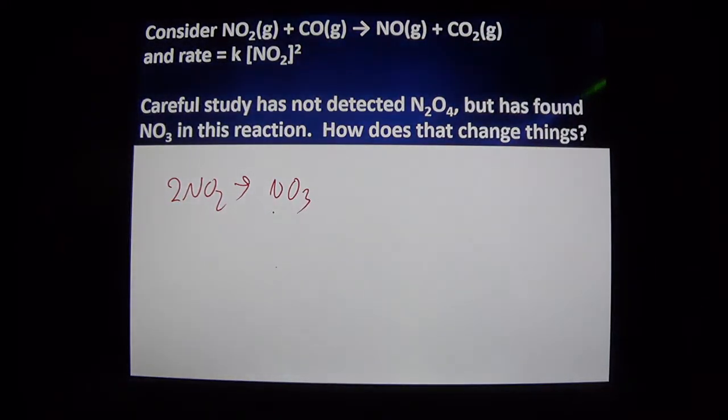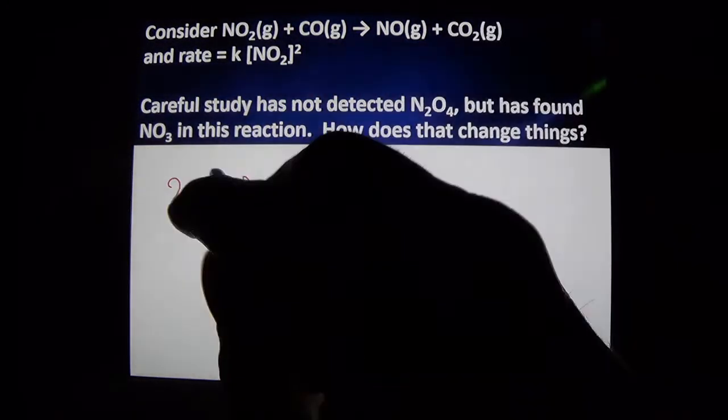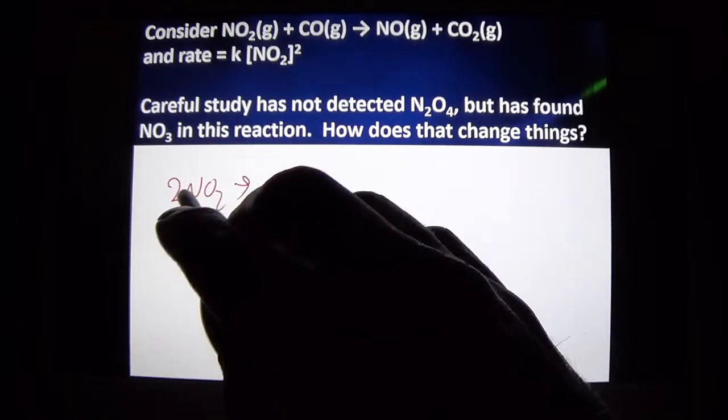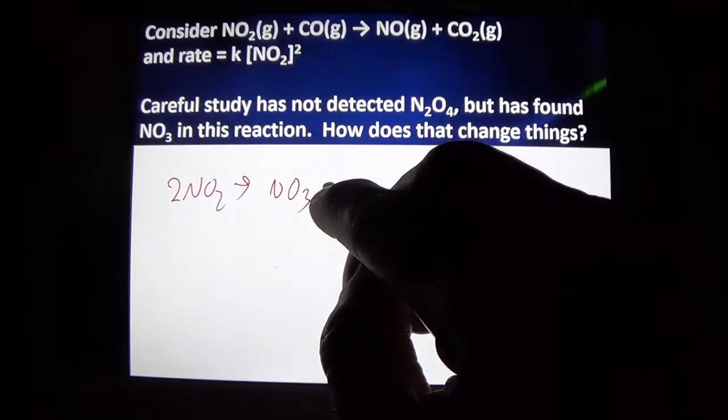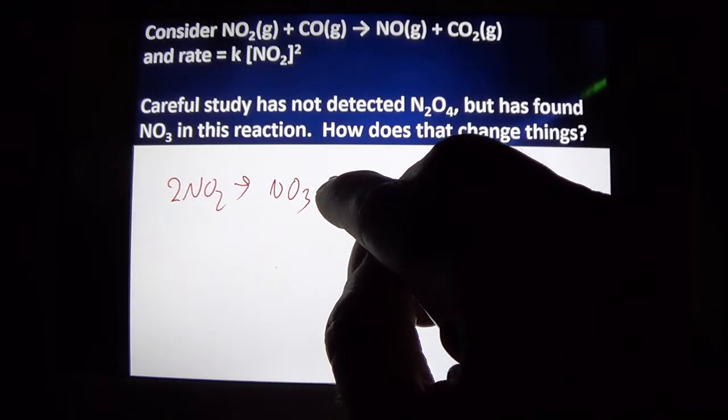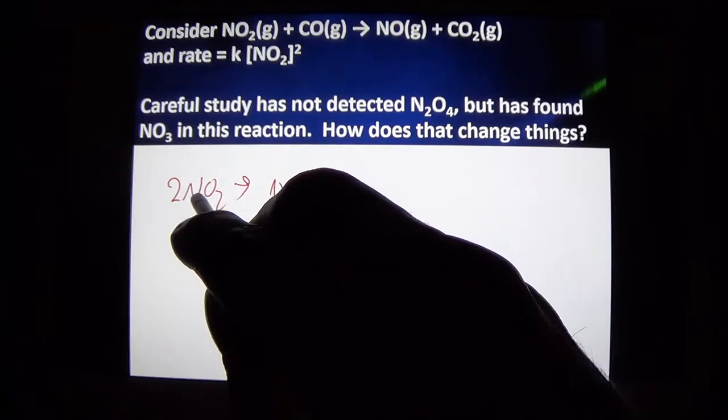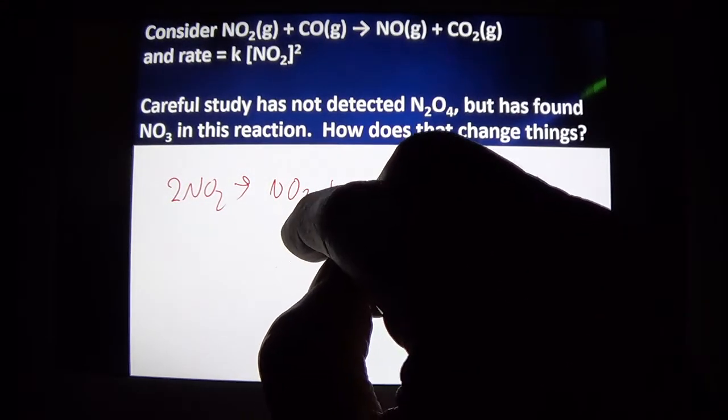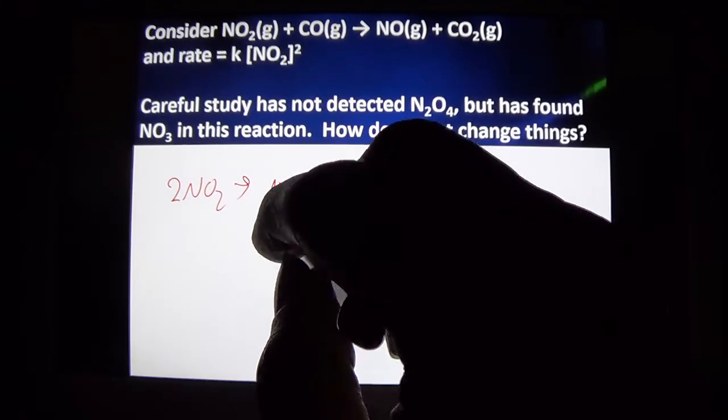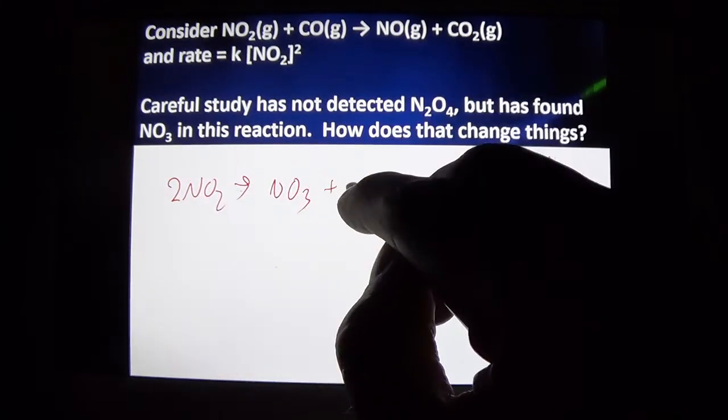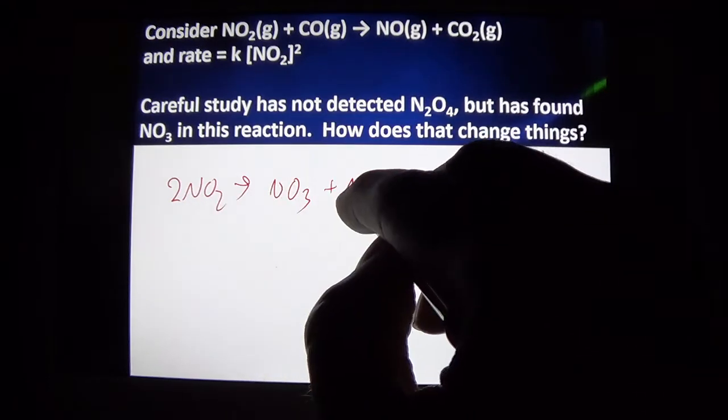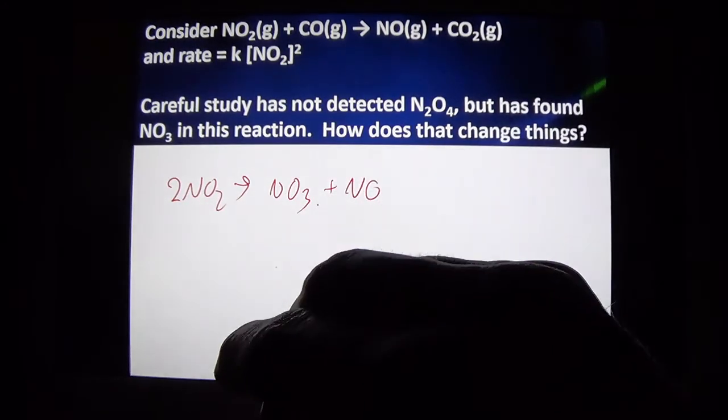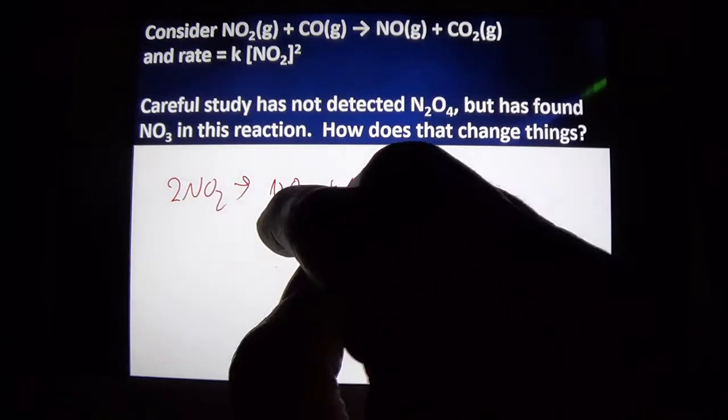How is that going to change things? If I'm finding NO3, what do I have then to continue this reaction? With the 2NO2s and the NO3 there, which is not nitrate by the way, there's no charge on it, I'm lacking a nitrogen and I'm lacking an oxygen.